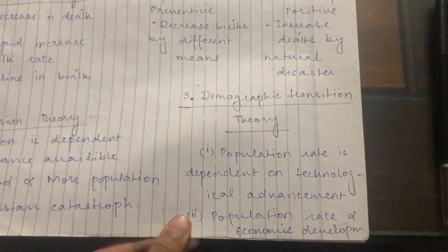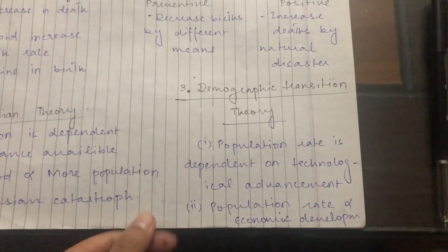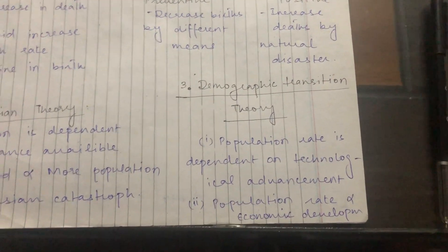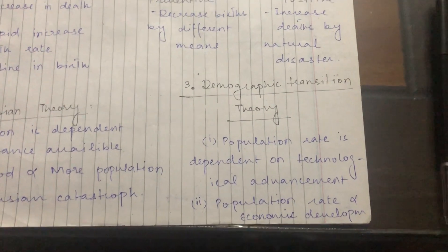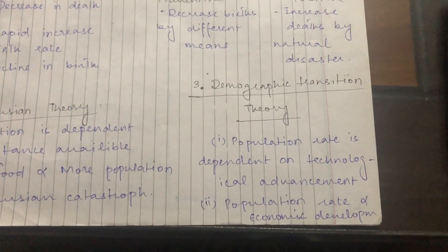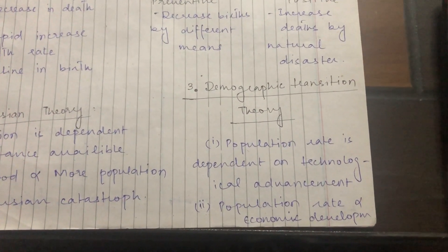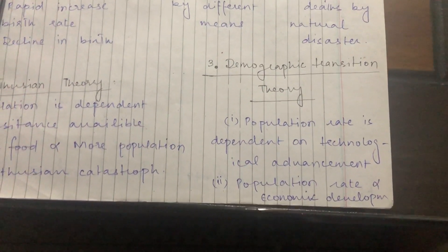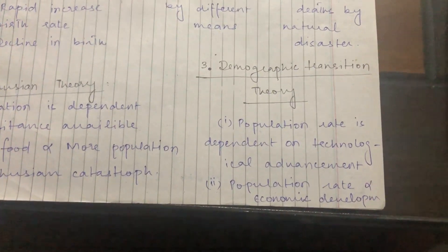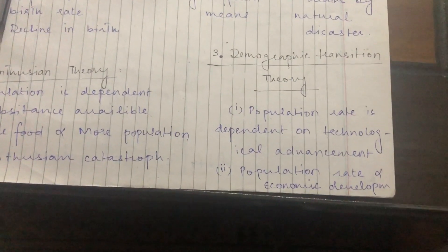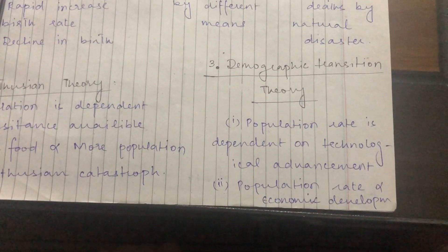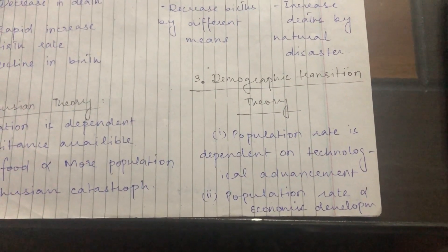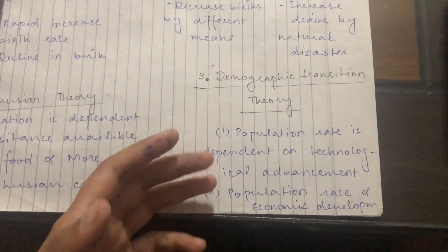The third theory is the Demographic Transition Theory. It says that the population rate is dependent on technological advancement in a particular area. The population rate is directly proportional to economic development. As people have more resources due to economic growth, they can facilitate and support a larger progeny from those resources.